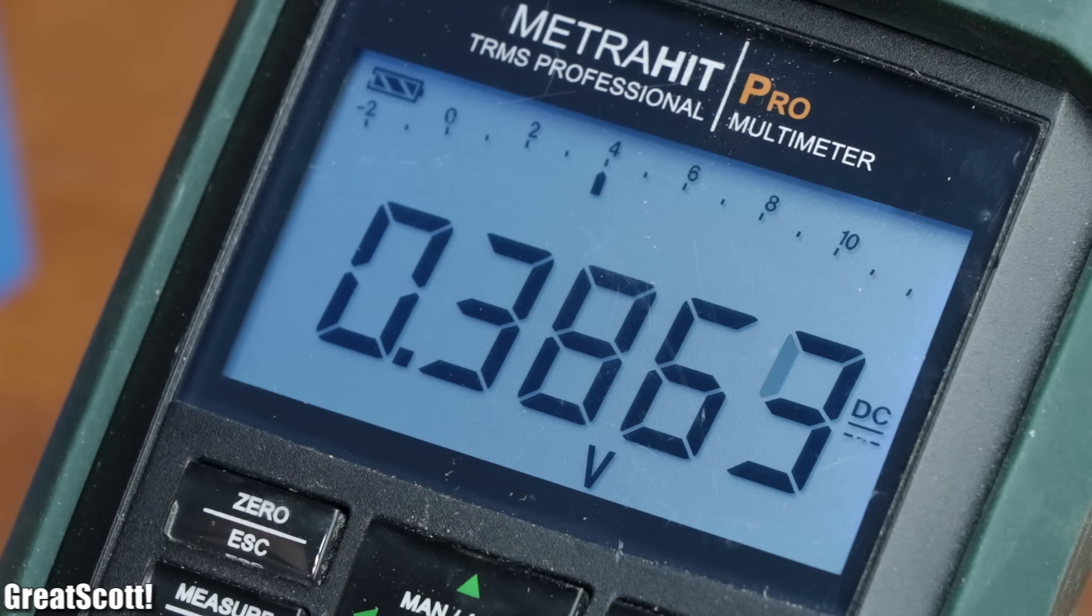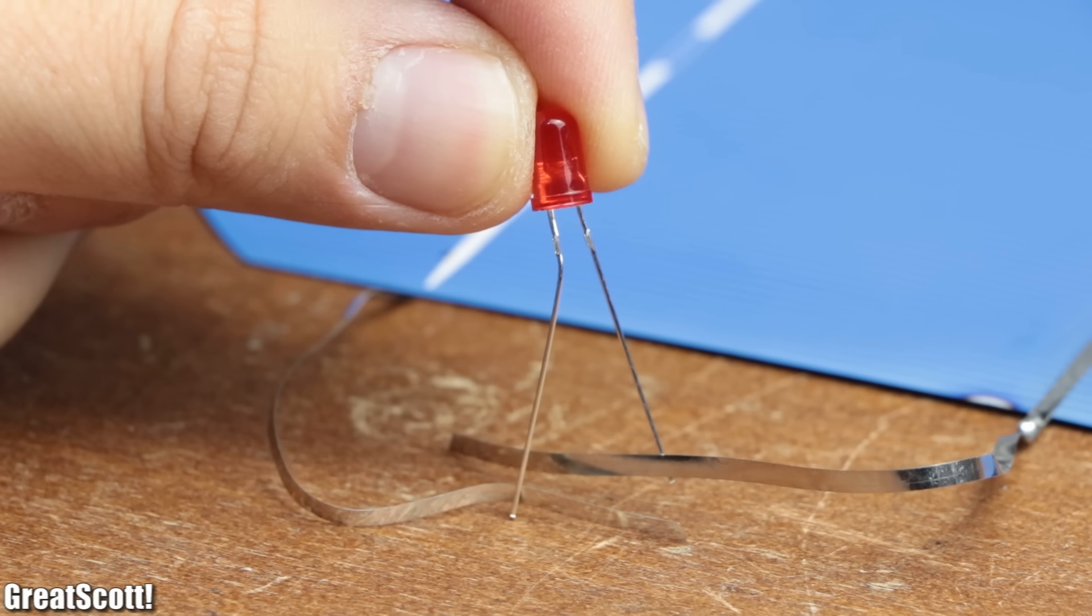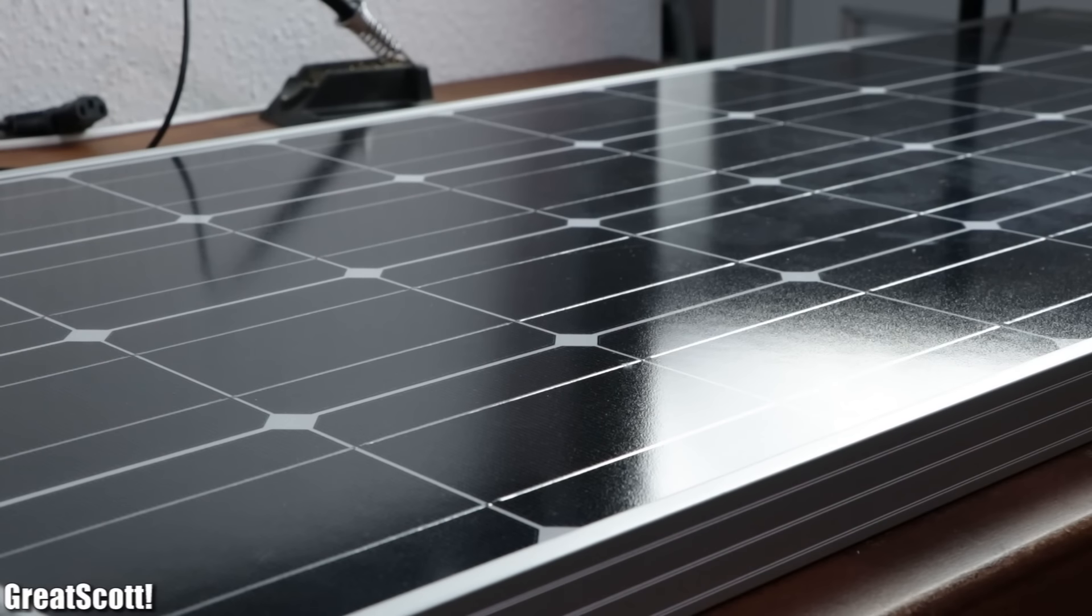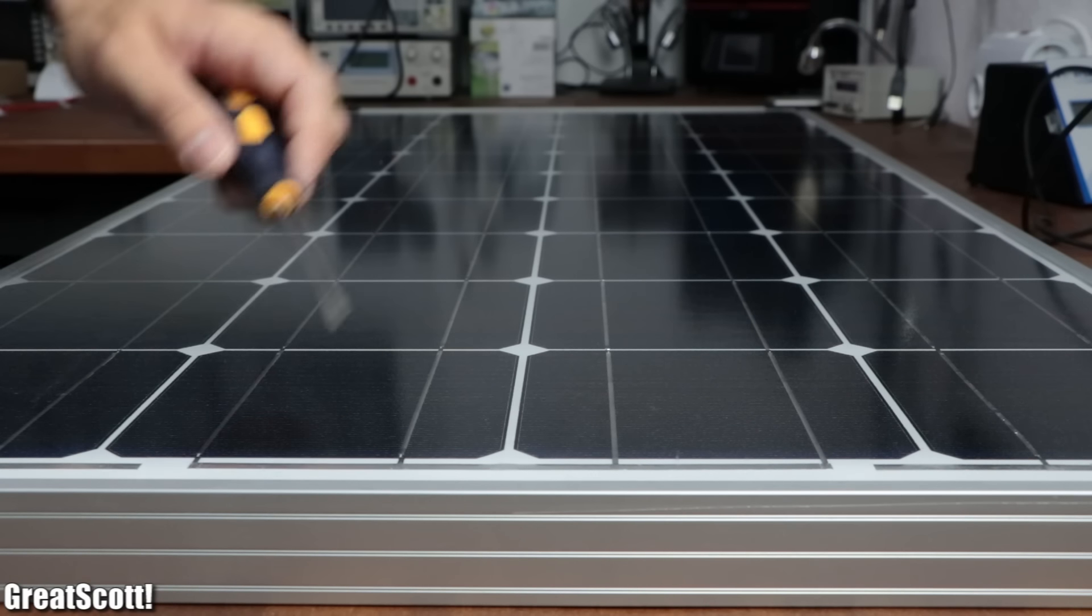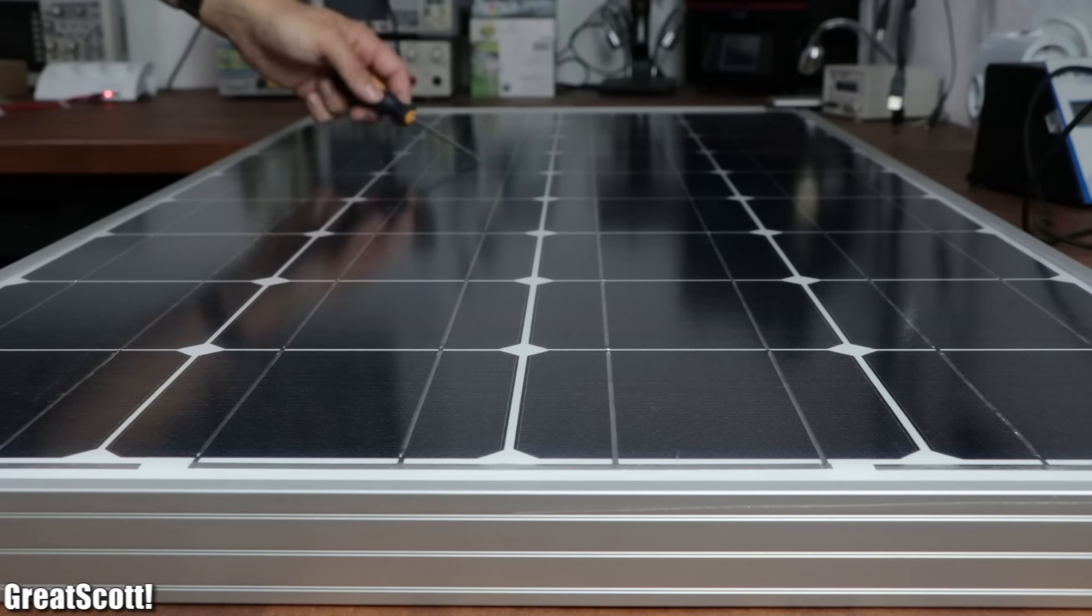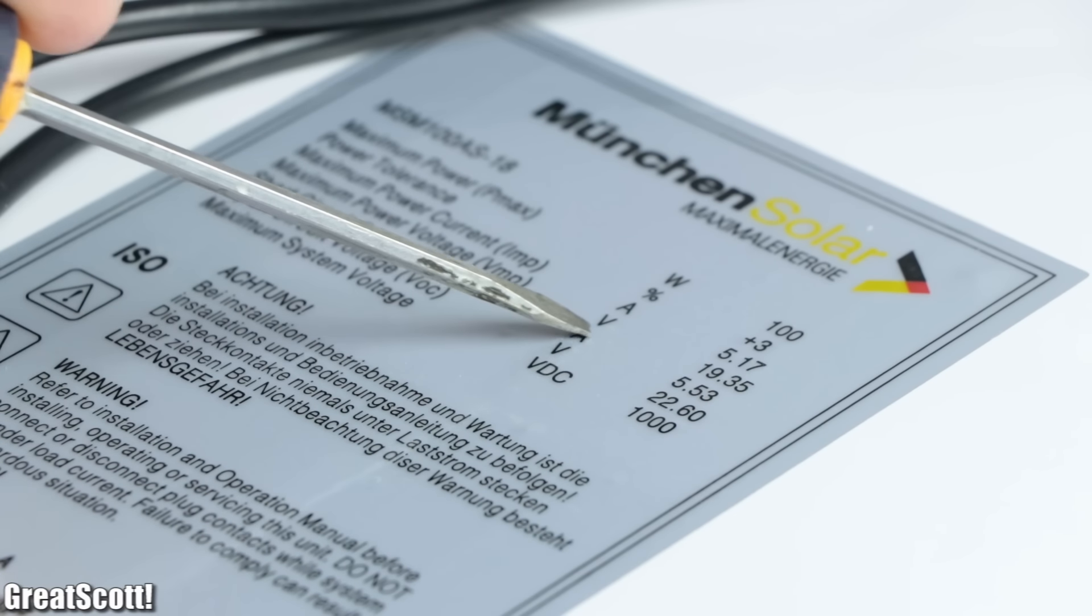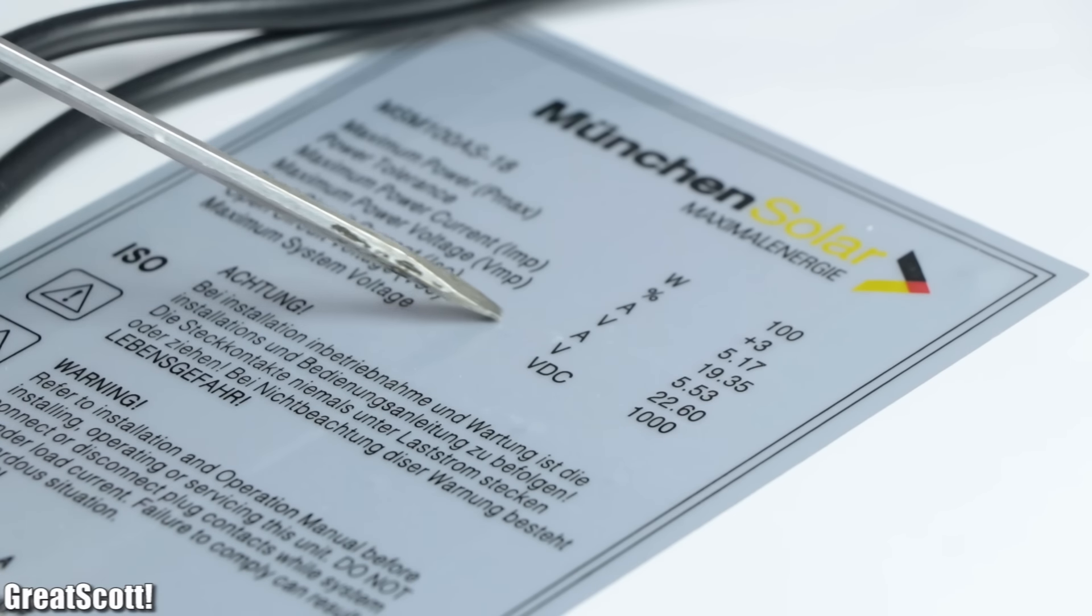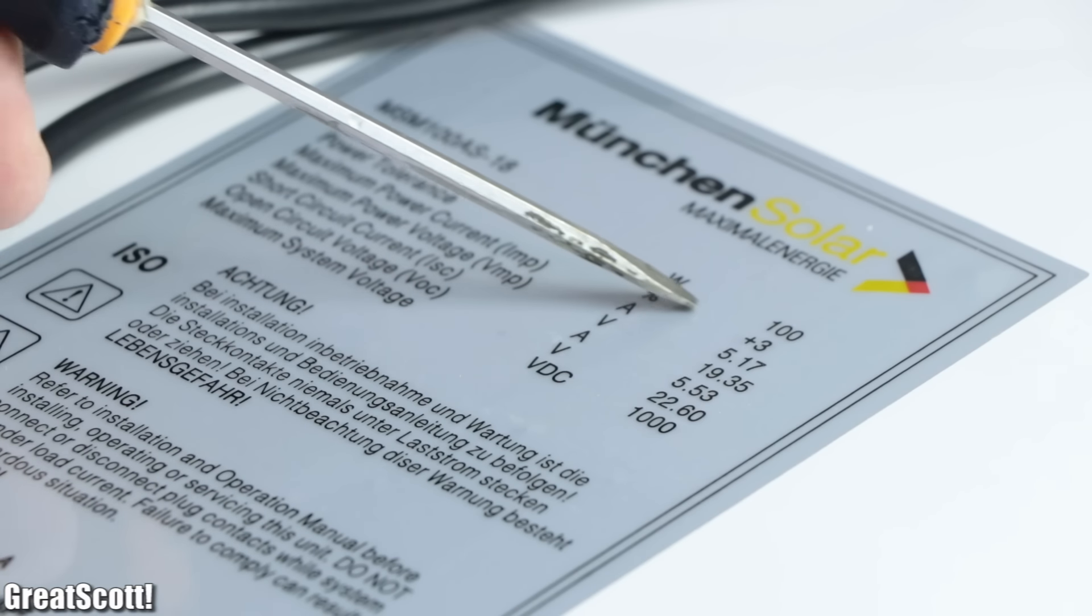Now of course the low voltage of one cell is not sufficient to power anything useful. That is why commercial solar panels like this 100 watt one puts a lot of those cells, 36 to be specific, in series in order to create a voltage of 19.35 volts, a short circuit current of 5.53 amps, and a maximum power of 100 watts.